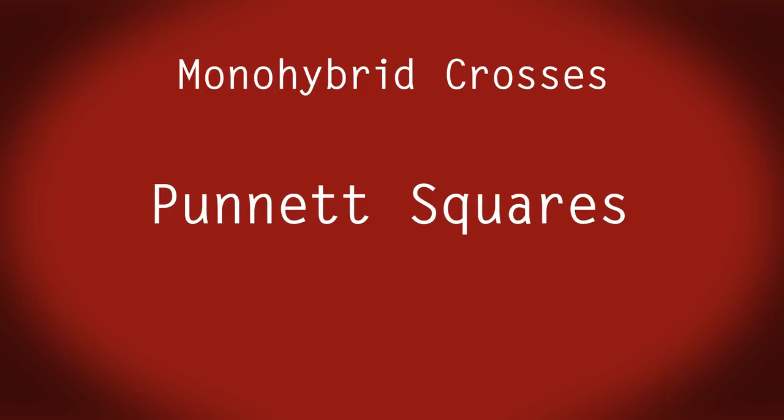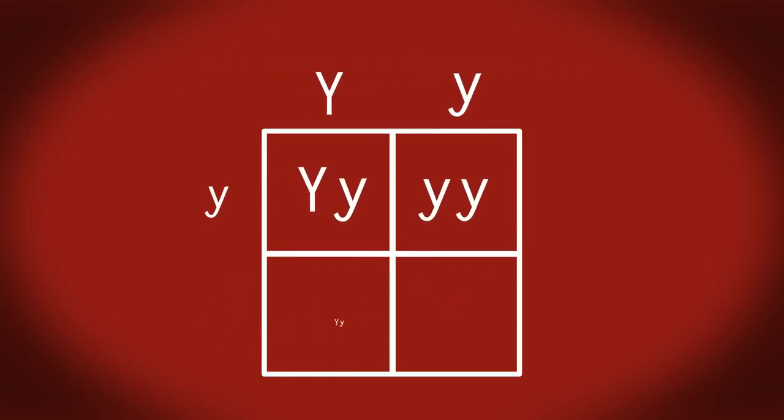A monohybrid cross is the study of the inheritance of one characteristic such as the pea pod color. A Punnett square is a diagram that is used to predict the outcome of a particular cross.